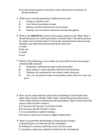Number 5. What is one way that petroleum is different than coal? A. Energy is stored in coal. B. Coal forms from plants on land. C. Mining coal does not harm the environment. D. Burning coal can release chemicals into the atmosphere.